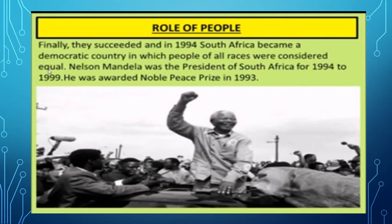In 1994, South Africa became a democratic country where people of all races were considered equal. Nelson Mandela served as president of South Africa from 1994 to 1999, and he was awarded the Nobel Peace Prize in 1993. So children, South Africa became a democratic country — and now, what is a democratic government?